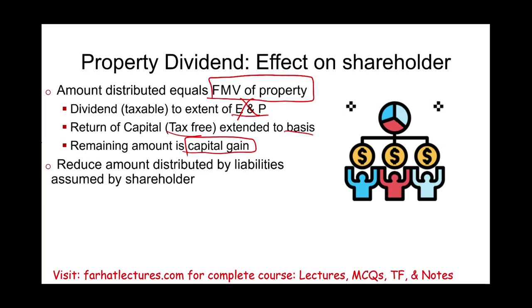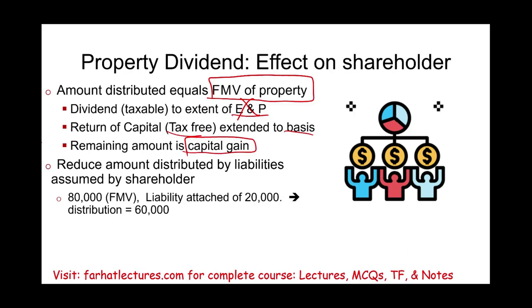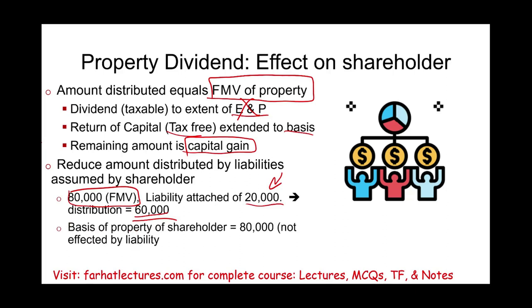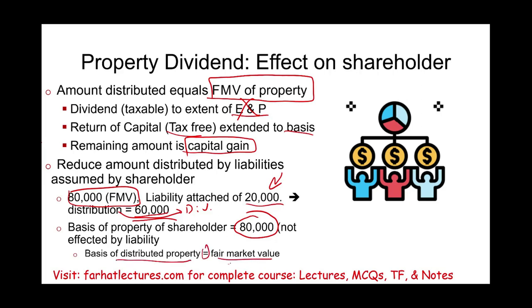We reduce the amount distributed by the liability assumed by the shareholder. For example, if the shareholder received an asset with a fair market value of $80,000 but attached to it was a $20,000 liability, the net to the shareholder is only $60,000 — that's their dividend amount. However, the basis for the property for the shareholder is the fair market value of $80,000, not affected by the liability. So the dividend is $60,000, but the basis is $80,000.